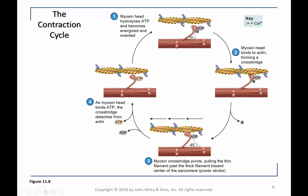This is our contraction cycle, which is powering this process. You have binding to the thin filament, release of phosphate, and beginning of the power stroke. At the end of the power stroke, you will lose ADP, and ATP can rebind to the crossbridge and then re-energize it so we can go through another cycle.